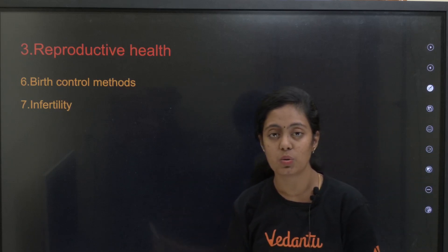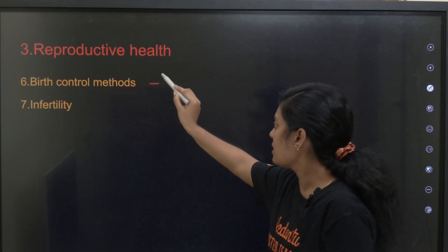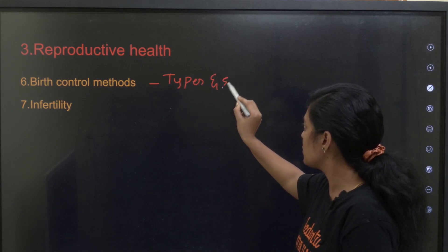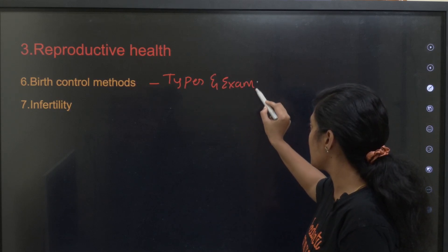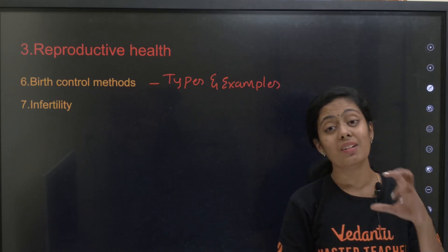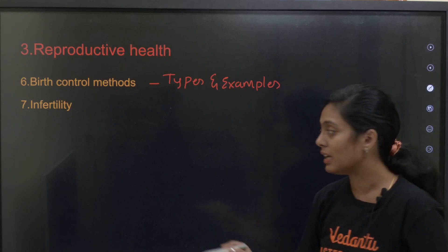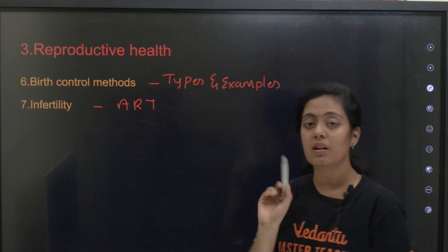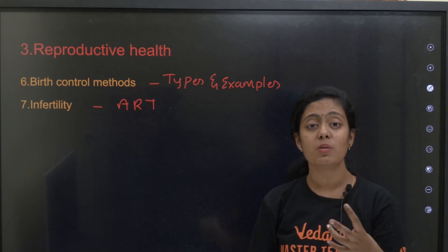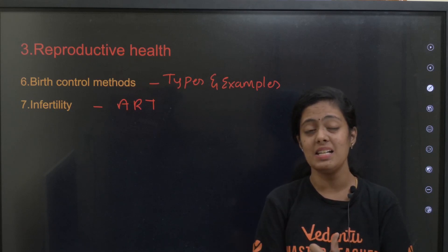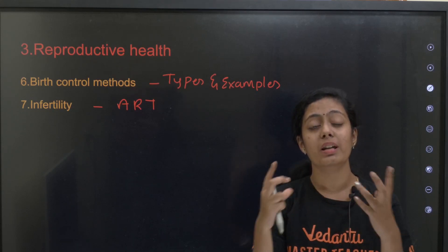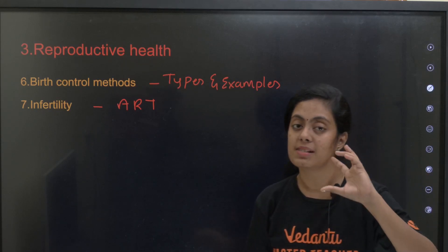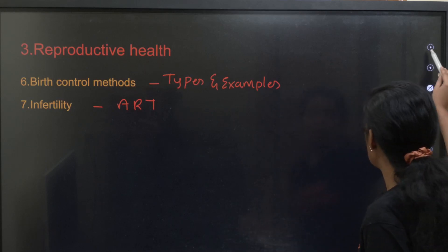The third chapter in the first unit is reproductive health. You have birth control methods — you need to learn types of birth control methods and examples of each. Then we have infertility, and under that something called ART — Assisted Reproductive Technology. You need to understand IVF, ICSI, and IUI. Definitions and abbreviations are very very important for your board exam.